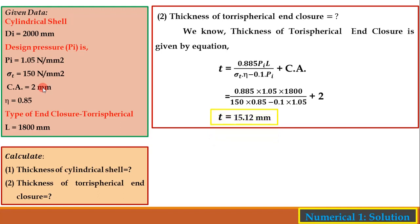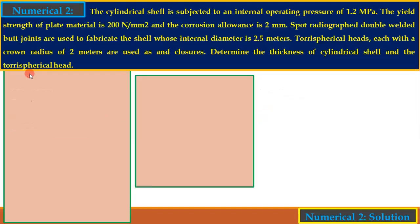With this, the first problem is complete. We calculated two parameters: thickness of the cylindrical shell and thickness of the torispherical enclosure. An important note: design pressure was calculated from operating pressure, and allowable tensile stress was directly given, so we did not need to calculate it separately.